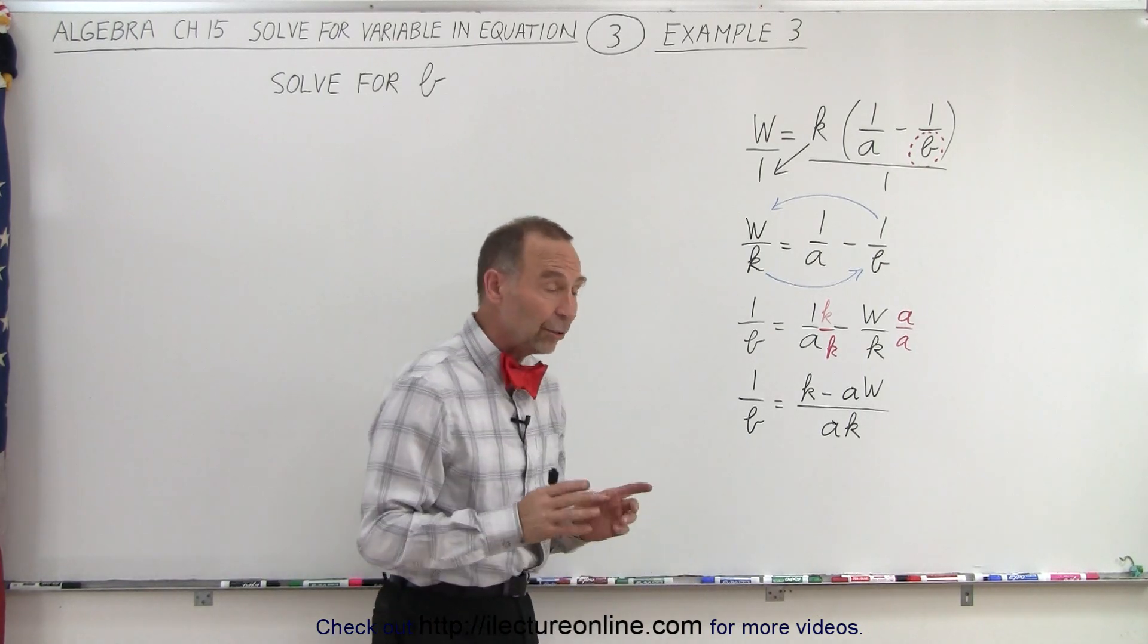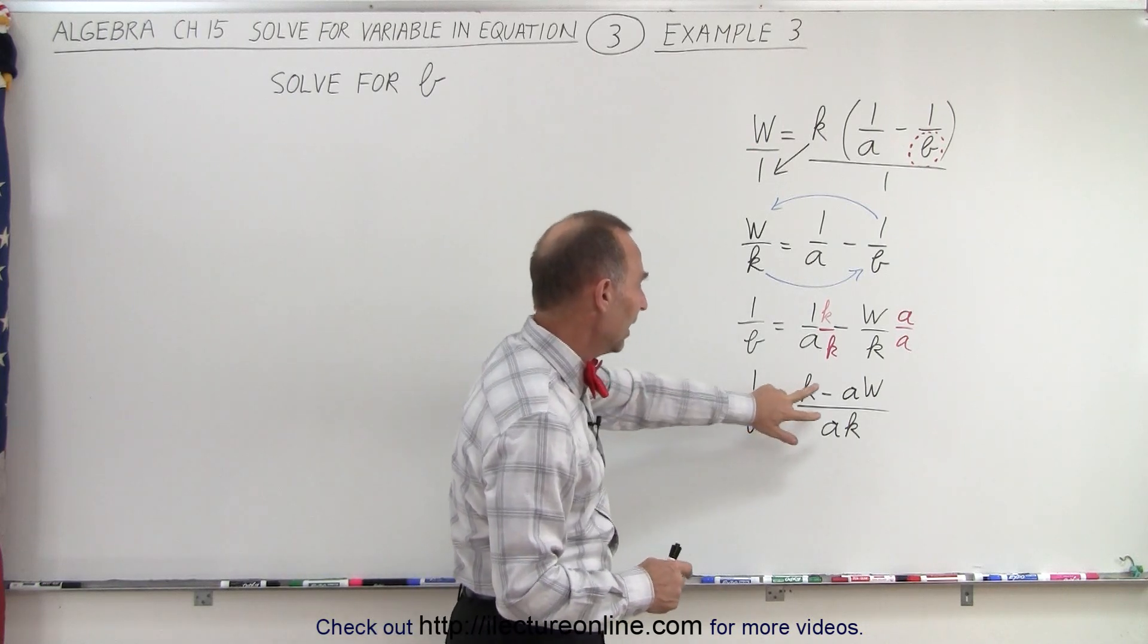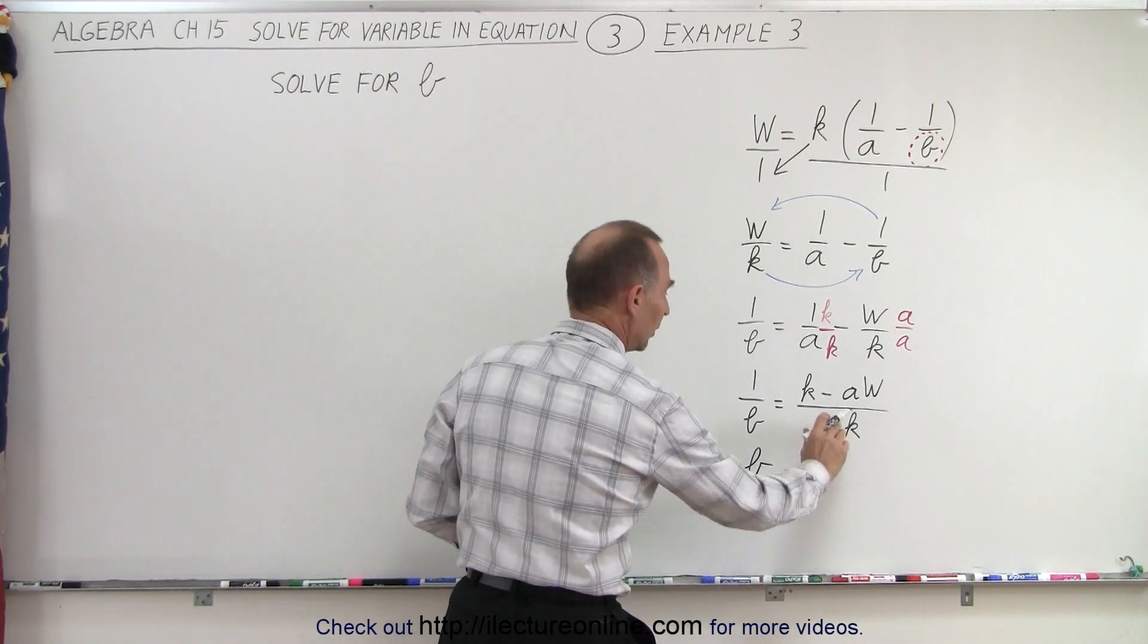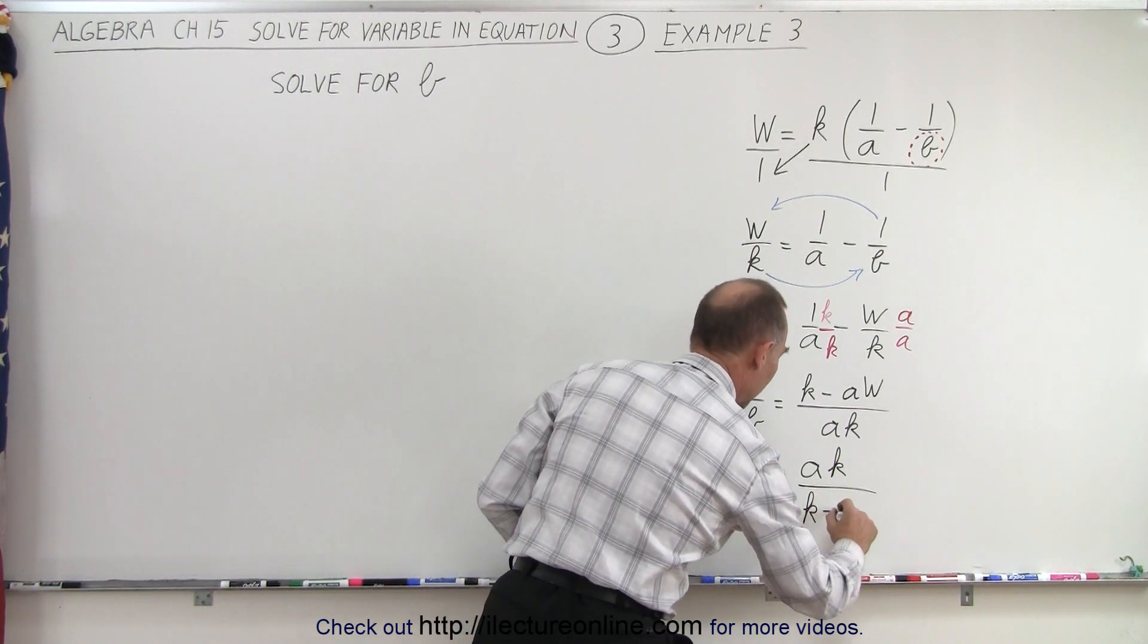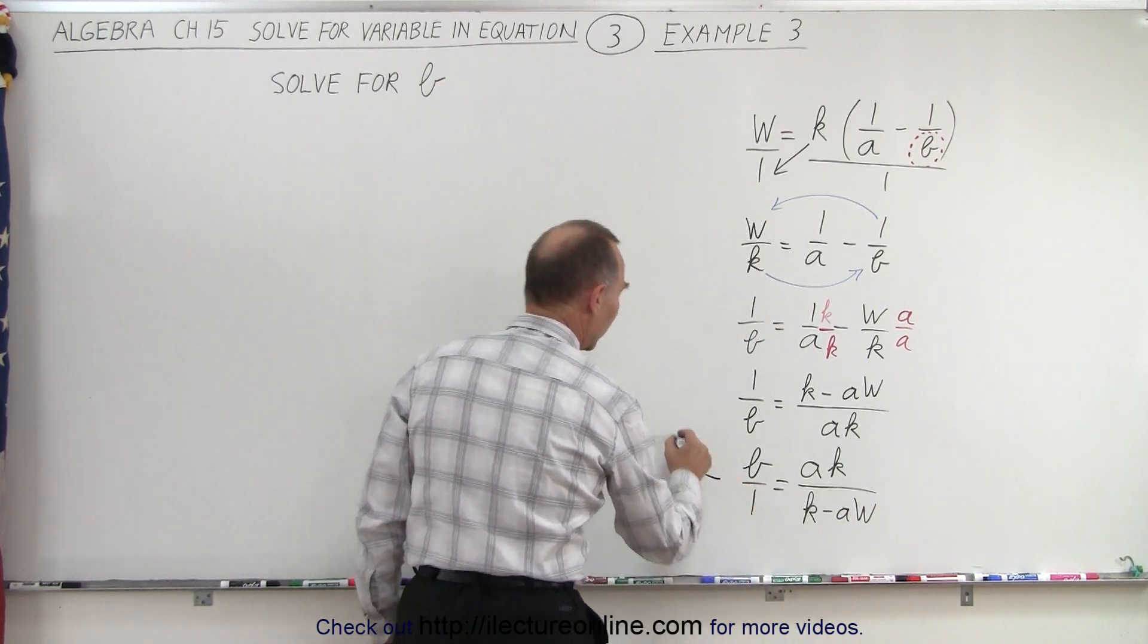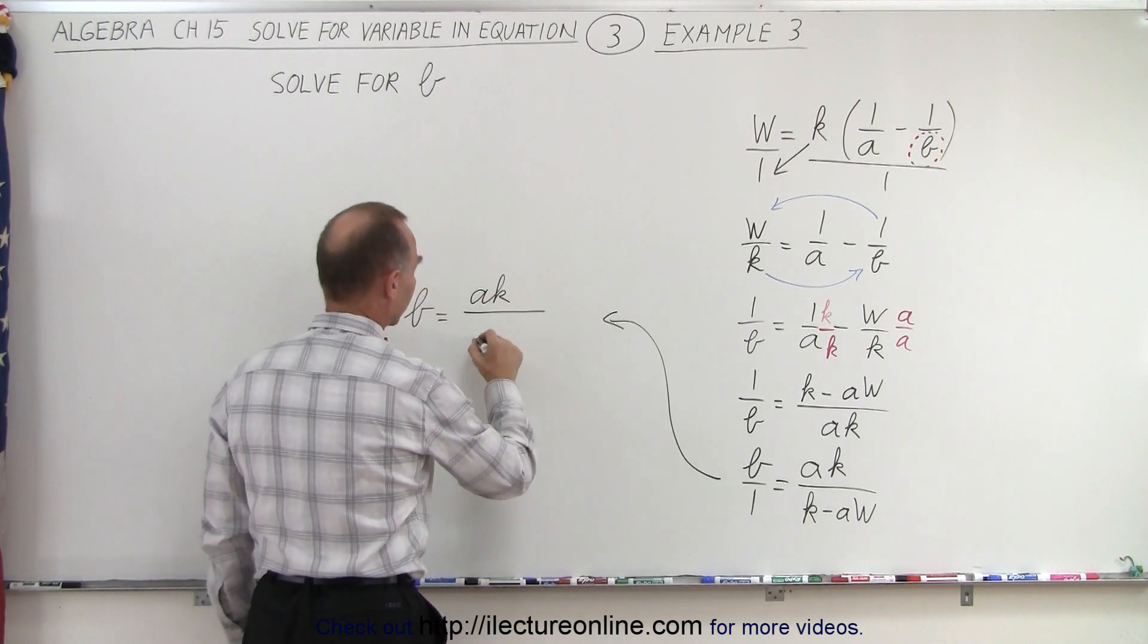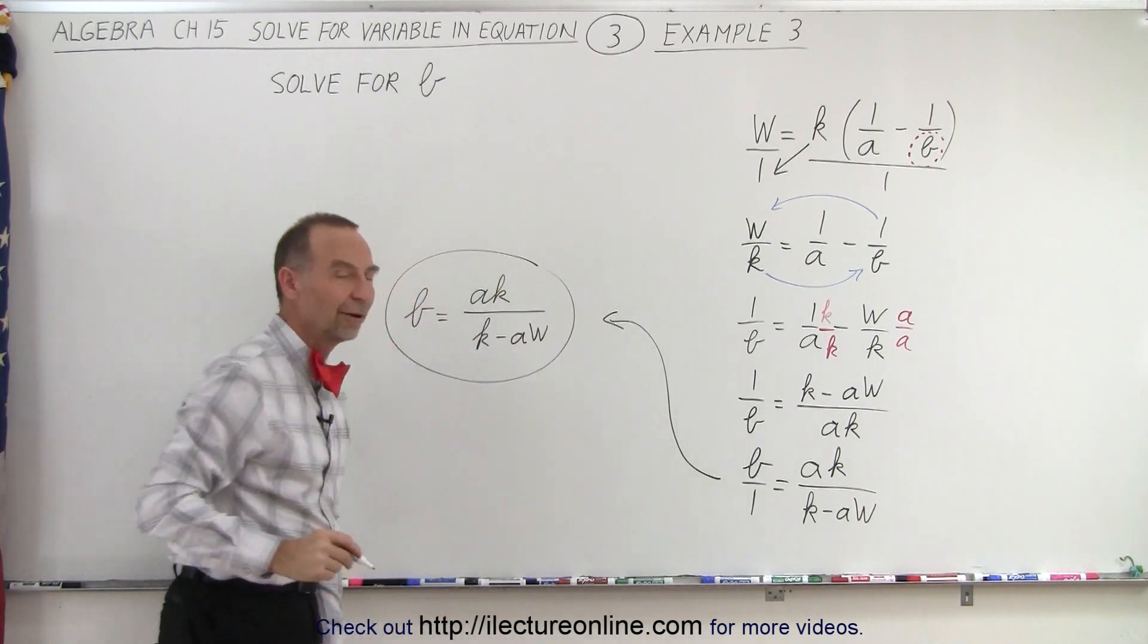So at this stage, in order to solve for b, what we need to do with the left side is take the inverse of the left side, and now, of course, we can also take the inverse of the right side. When we do that, we get the following. We get b over 1 is equal to, we have ak now on the numerator, and this comes down to the denominator k minus a times w. And of course, we don't have to write b over 1. We can simply then write that this is equal to b equals ak over k minus aw. And that's how we isolate for that variable b.